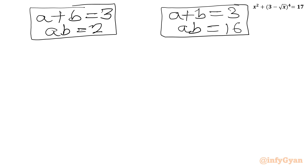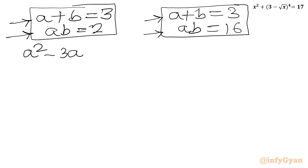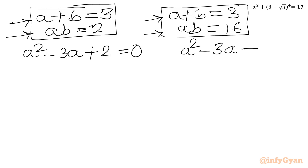We can think of a quadratic equation whose roots are a and b, where the sum of roots is a plus b and the product of roots is ab. From system one, we write directly: a² minus 3a plus 2 equals 0. From system two: a² minus 3a plus 16 equals 0.